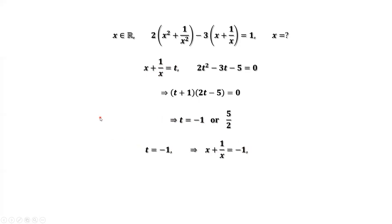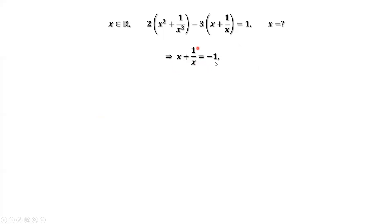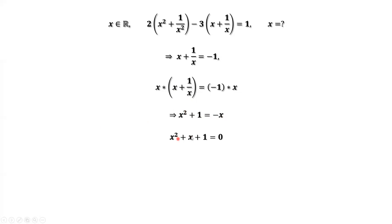How to solve this? Multiply both sides by x to get rid of the denominator. This gives x squared plus 1 equals negative x. Moving negative x to the left-hand side, we have this quadratic equation. It's easy to check — this quadratic equation has no real solutions. We need real solutions for x, therefore t cannot be negative 1.